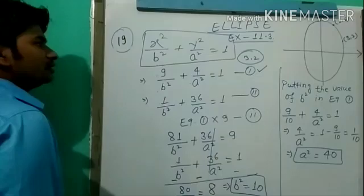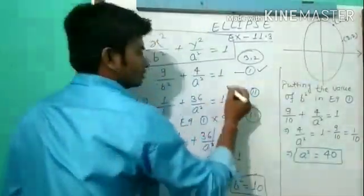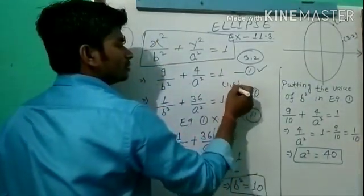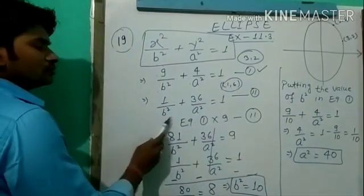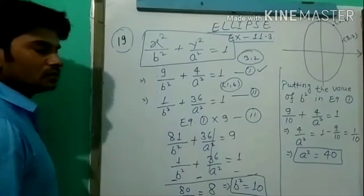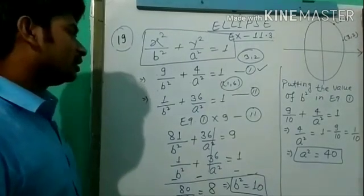Now we use the second point (1,6). Since the ellipse passes through (1,6), this will also satisfy the equation. So we get 1/b² + 36/a² = 1.